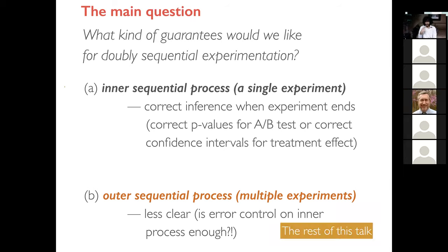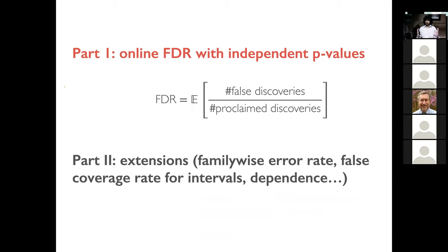When you're ready to declare a discovery — an action that could have monetary or scientific consequences — should you correct for the fact that you've been testing so many hypotheses and will be testing more in the future? If you're going to correct for it, how will you do it? I'll talk about online FDR control with independent P-values first, then extensions. This is a good time to pause for any questions about the setup.